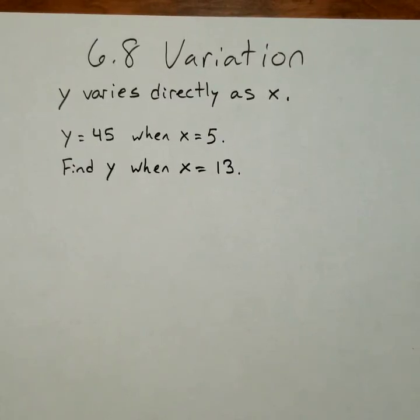All right, so I'm going to run through a couple different examples of variation problems. First one here is a basic one: y varies directly as x. It gives you some information about y and x, as y is 45 when x is 5, and then we have to find y when x is 13.